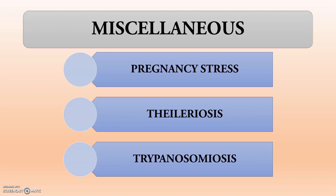The fourth category is miscellaneous — we should also assess pregnancy stress, energy status, blood glucose levels, and the amount of volatile fatty acids produced in the rumen. Additionally, we must rule out theileriosis, which is a hemoprotozoan disease mainly seen in cattle, and also trypanosomiasis. Out of these four main categories, we have to rule out all the subcategories.